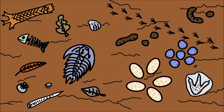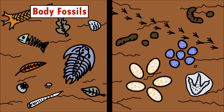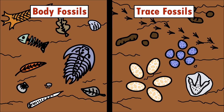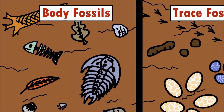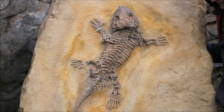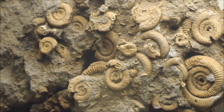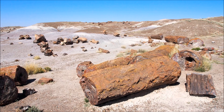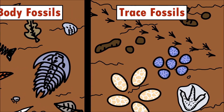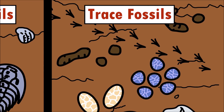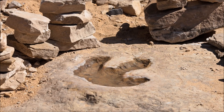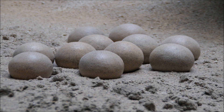There are two main types of fossils: body fossils and trace fossils. Body fossils include bones, teeth, shells, and wood. Trace fossils are activities and impressions of an animal, such as footprints, nests, and even their poop!